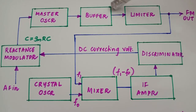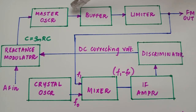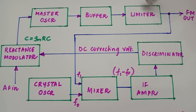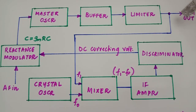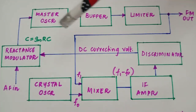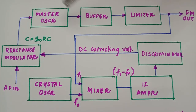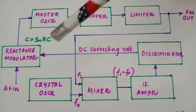There is a buffer circuit to isolate the master oscillator from the remaining part of the circuit so that the frequency of oscillations is not disturbed. There is also an amplitude limiter — in FM modulators we can use amplitude limiters because no information is contained in the amplitude. This completes the FM generation section using the reactance modulator and master oscillator.